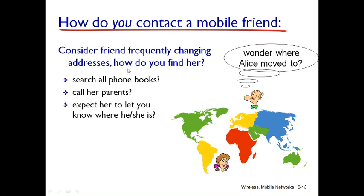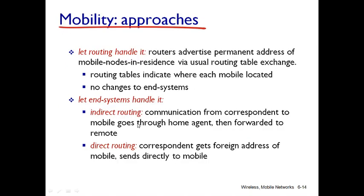The question is: how do you contact your mobile friend if they are frequently changing address? There are different ways — search all the phone books, call their friends, or expect them to let you know where they are — all of these are difficult. So as soon as the user moves from one network to another, the related router does the changes in the routing table. There are different types of mechanisms: indirect routing and direct routing.